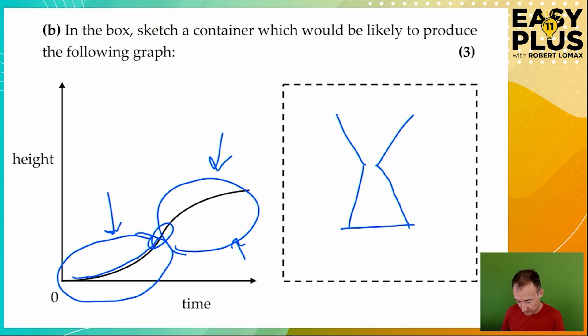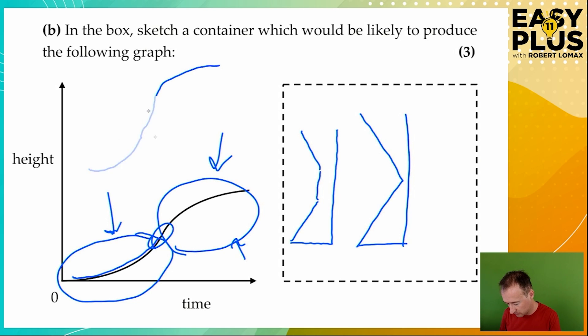You could draw this in other ways. So for example, you might have a container that looks something like this, for instance, but here are some things that you couldn't draw. So for example, a container like this would not work. Because if you had a container like this, there'd be a period of steady fill in the middle. It would start off curving like that, then slowing down as it widens, and then it would speed up again in its gain of height as the container narrows towards the top.